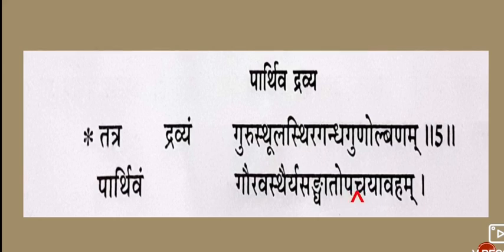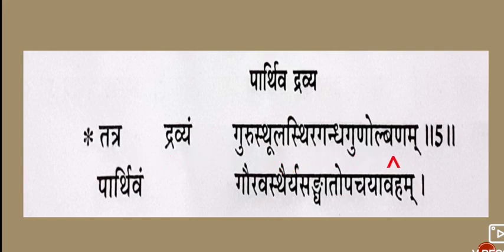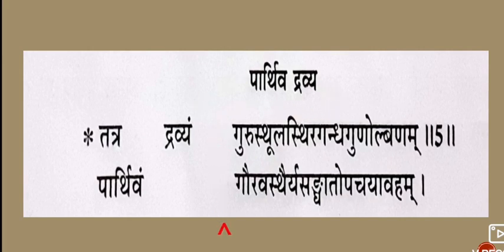The conversion from glycogen to glucose and from glucose to glycogen — all these metabolic processes are done by Parthiv Drava. So to summarize, the properties of this Drava are Guru, Sthira, Sandra, Gandha, and Manda, and its activities include Sanghat and Upachaya in the body. So that is about Parthiv Drava. In the next class we will discuss Aap Drava. Thanks for watching the video.